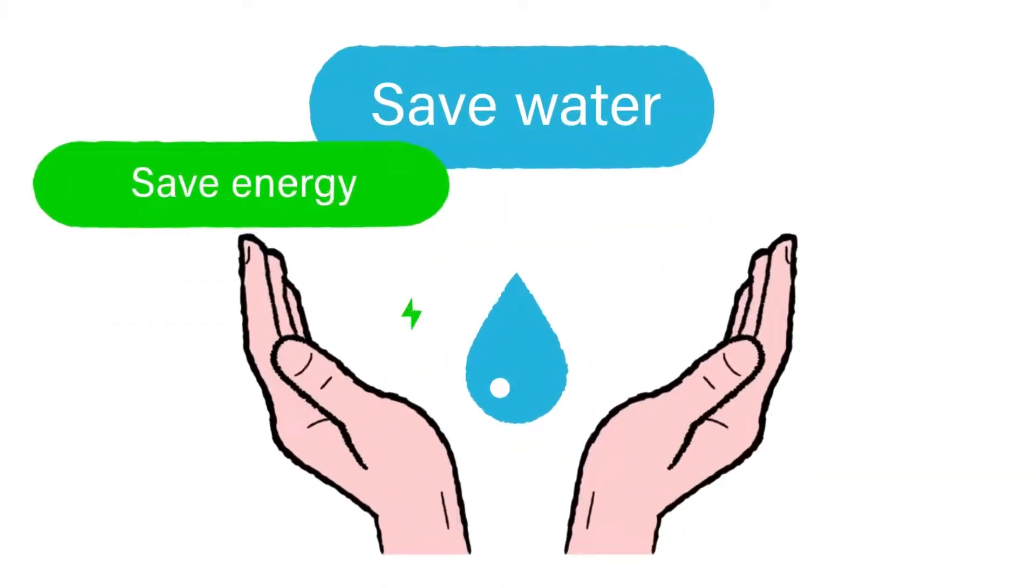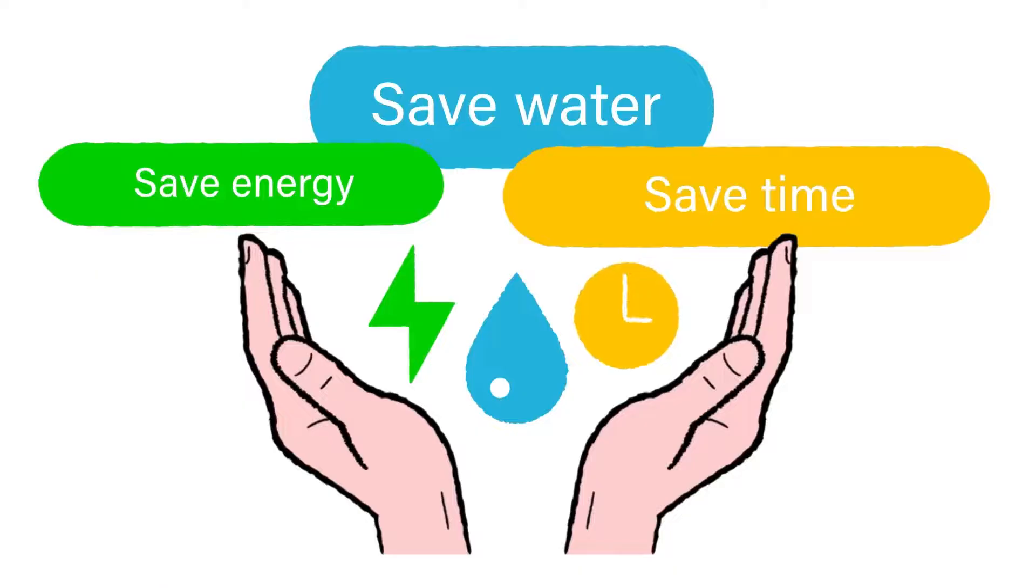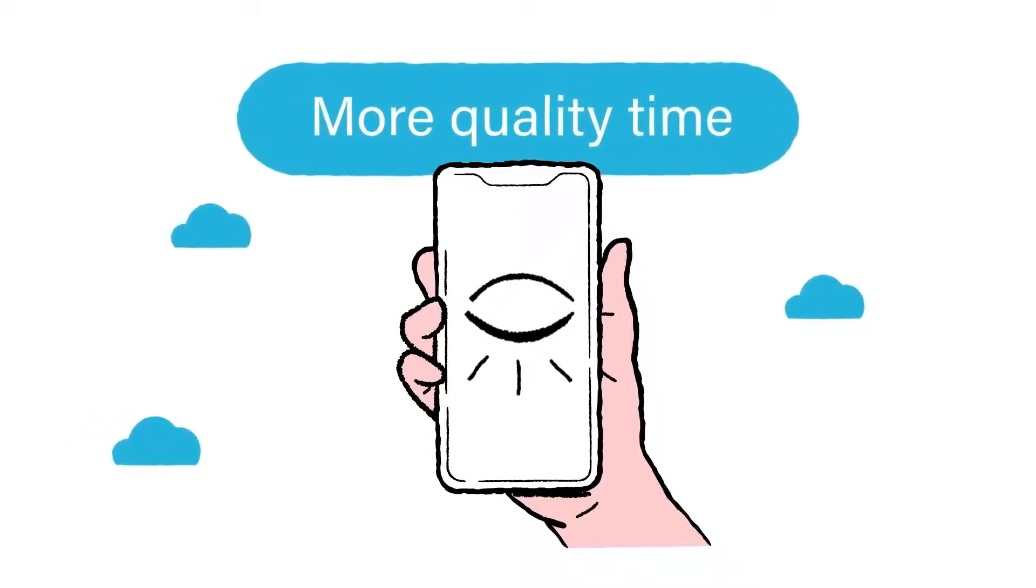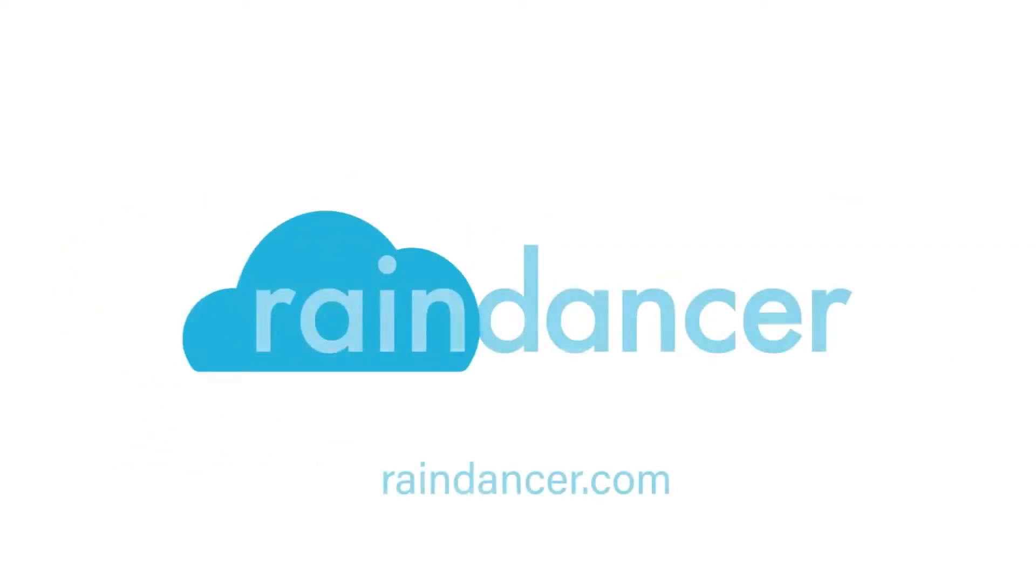So using Rain Dancer, you'll save water, energy, as well as time. All information right out of your pocket. You'll have more control and so more quality time.